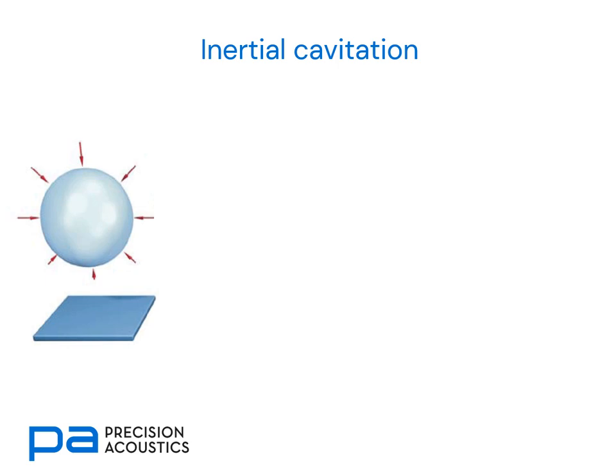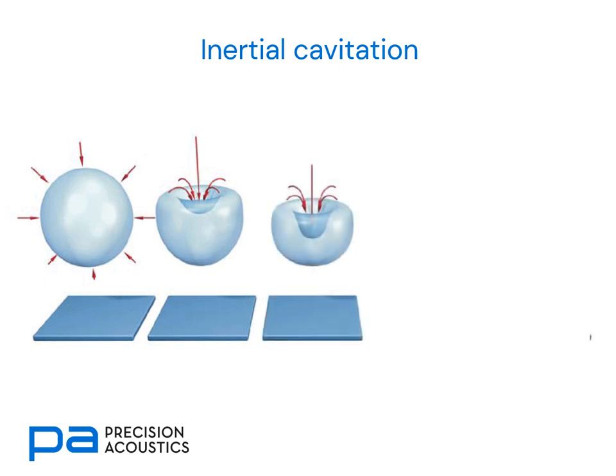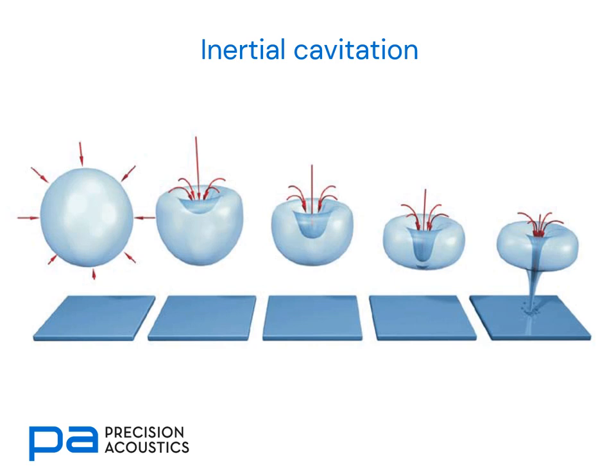Now let's consider inertial cavitation. As mentioned previously, this tends to occur at higher pressures, and therefore when we have a higher tensional phase, we can get to a point where the external forces looking to compress a bubble are greater than the internal forces maintaining its shape. This tends to lead to a bubble which is starting to buckle at its outer surface. Once buckling happens, the inertia of the water outside rapidly results in a jet propagating through, and this jetting can cause considerable damage to any surface that may be behind it, as it can be moving very fast indeed — often hundreds of metres a second.